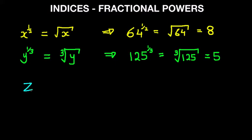And lastly, we have z to the power of a quarter. So let's write this down. And what this means is which number multiplied by itself four times gives the answer.